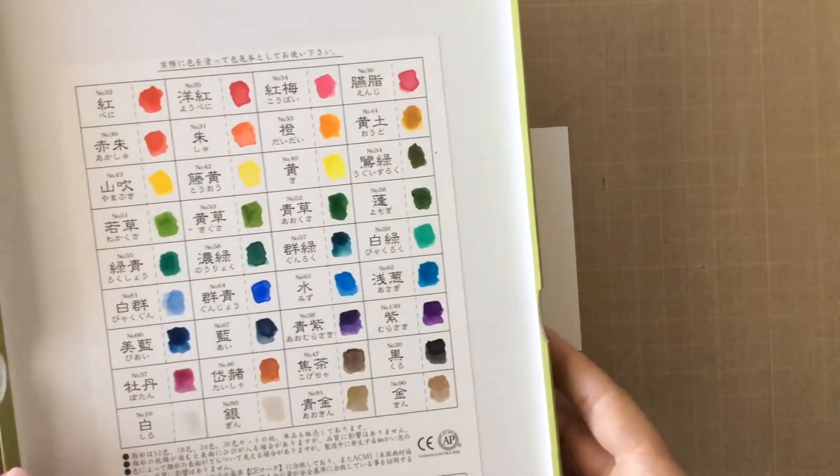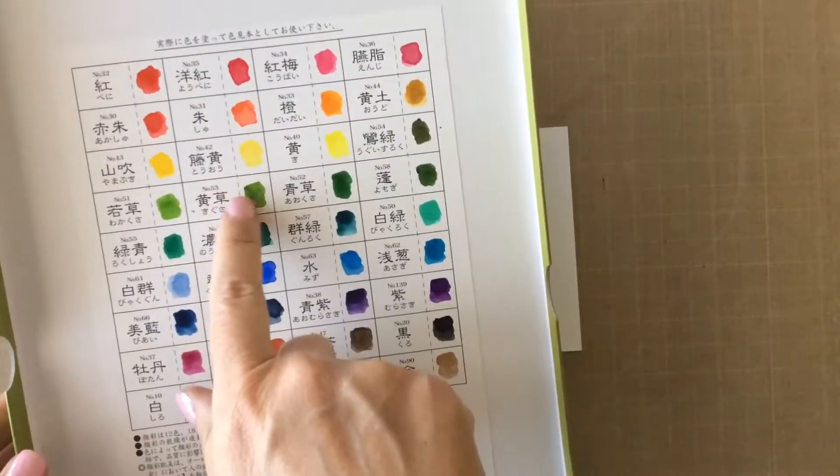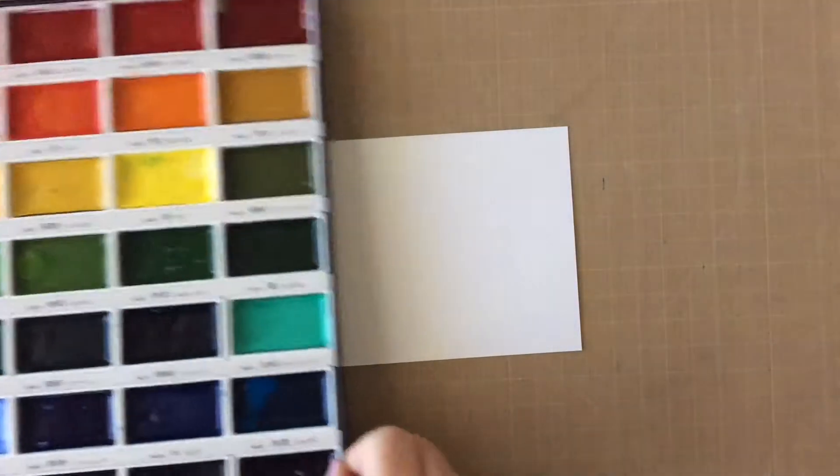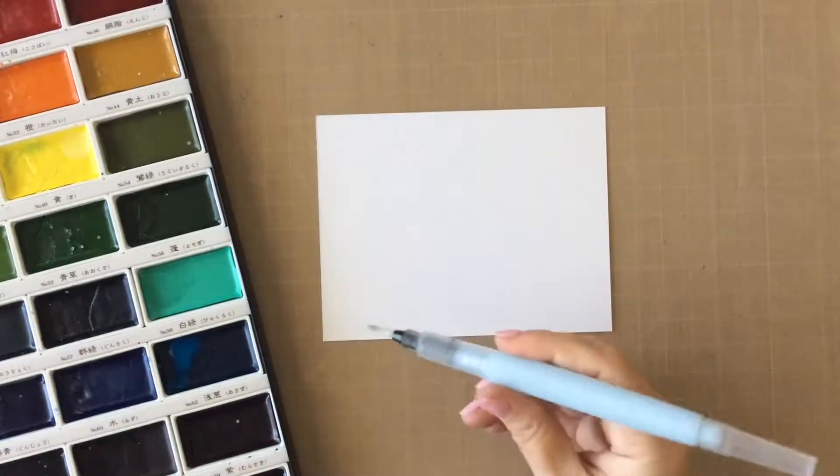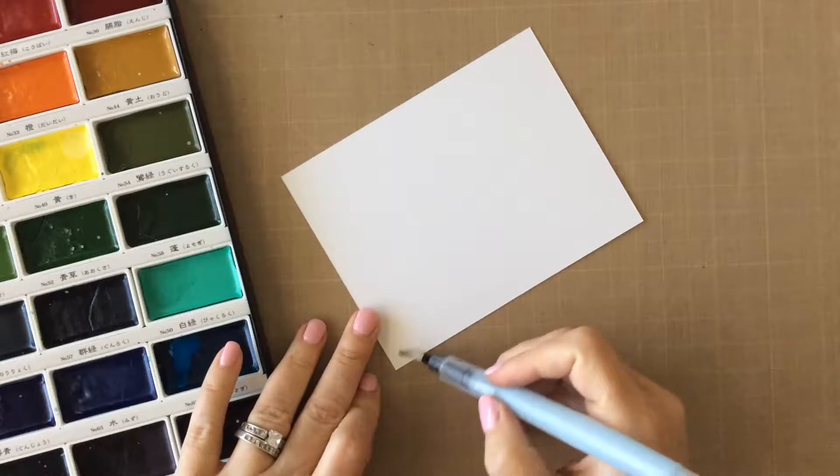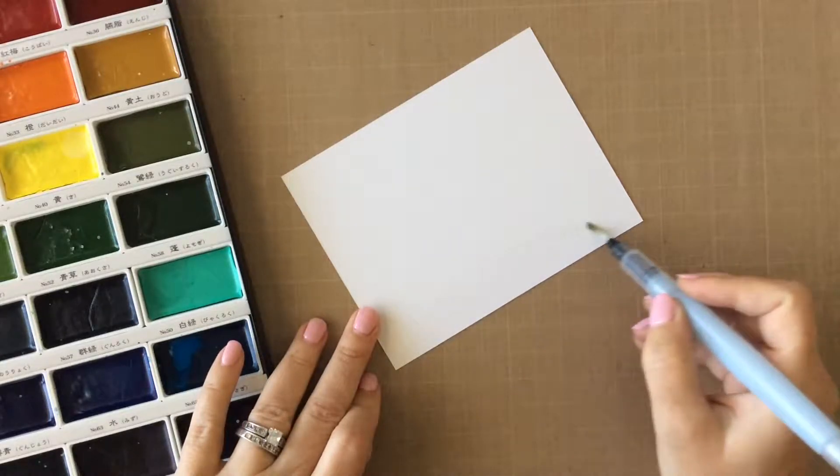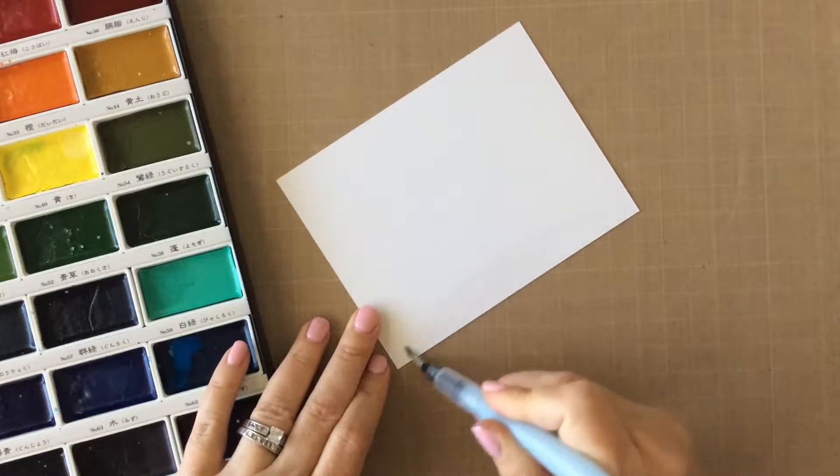I have some Tim Holtz watercolor paper here, and these Kuretake Gansai Tambi watercolors. And this number 62 is perfect to make the earth, and also number 53. So I'll be using those two colors to create this, and a water pen. This is just a Sakura water pen, and I'm going to just create a curve here at the bottom of the card using just a little bit of water.